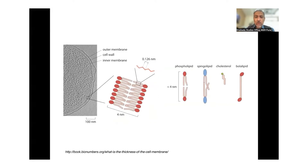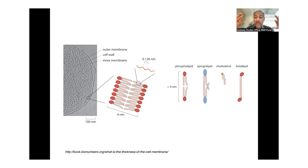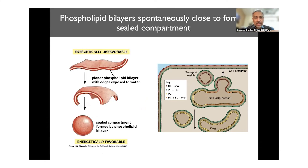The membrane assembly has a very defined thickness, significant flexibility, and significant strength — it's not something that can easily be ruptured unless a certain amount of force is applied. There are innumerable proteins that have evolved to modify the membrane, which is a remarkable thing. Everything from the bending of the membrane to creating folds — proteins have found a way to work with this lipid membrane and do things with it.